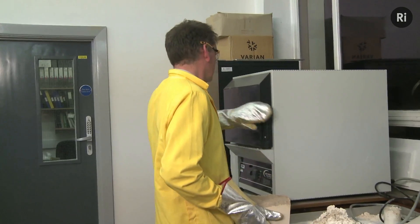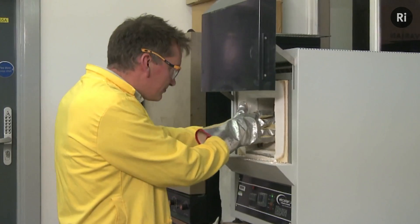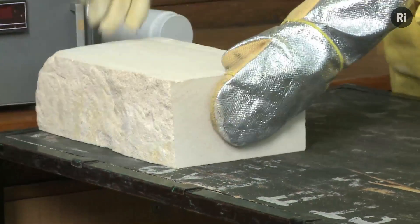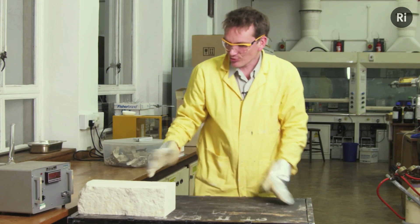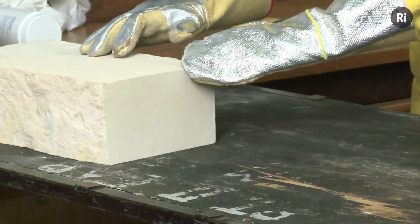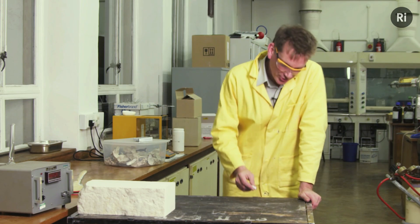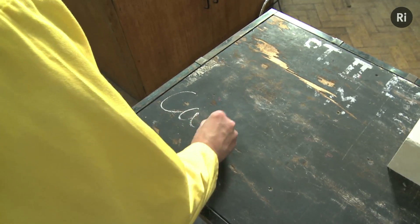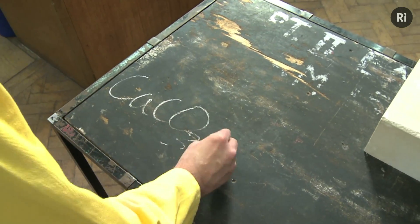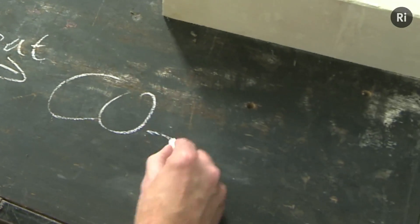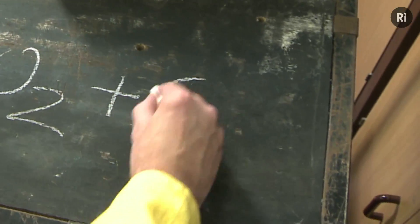There's another way we can drive out the carbon dioxide and that's simply by heating it. This block has now been in the oven for 24 hours and was allowed to cool overnight. Well, it looks pretty much just the same as it did before, but actually it's completely different. Its chemical structure has now changed — before we had calcium carbonate, and heating it up drives out the carbon dioxide and leaves us with calcium oxide, or quicklime.